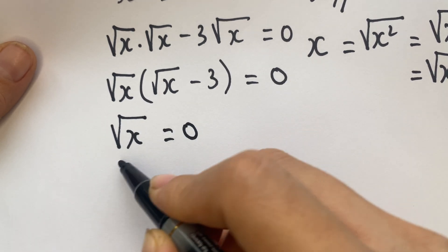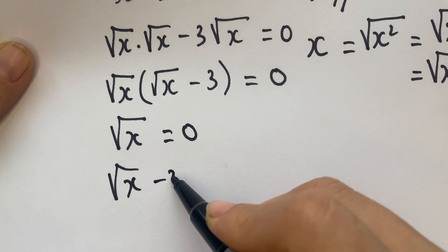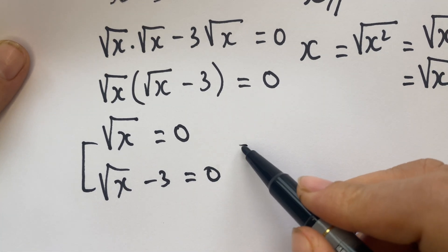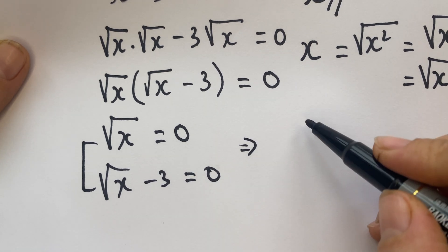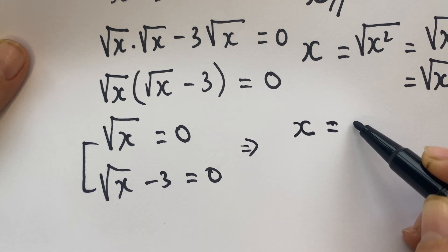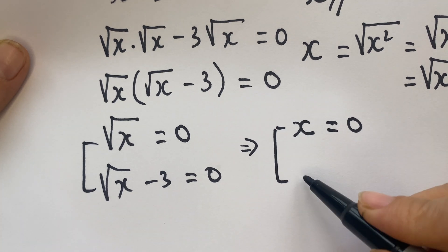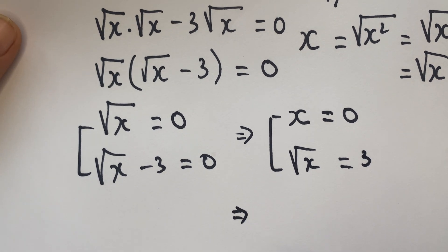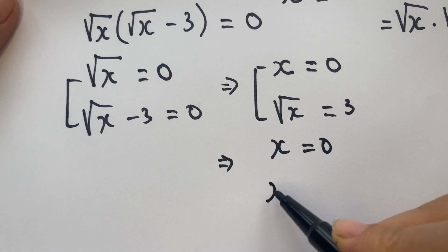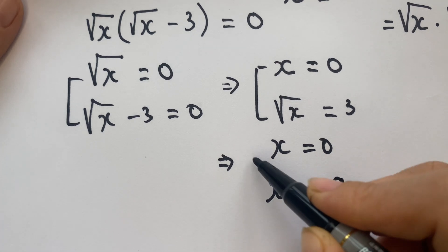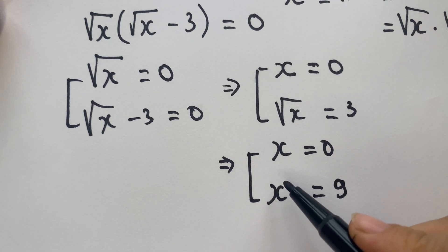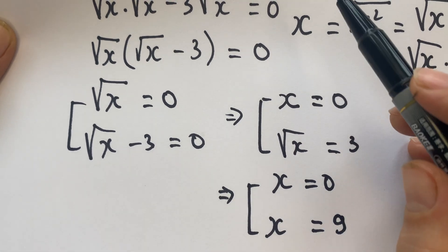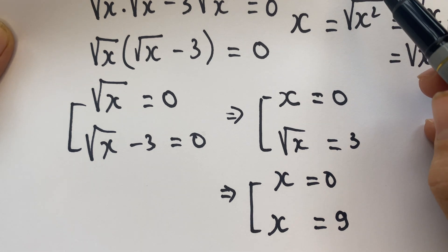Square root of x equals 0, and the next one: square root of x minus 3 equals 0. Everyone can see square root of x equals 0 means x equals 0. And the next one, square root of x equals 3, so x equals 9. Note that square root of x must be greater than or equal to 0.